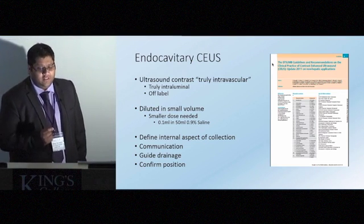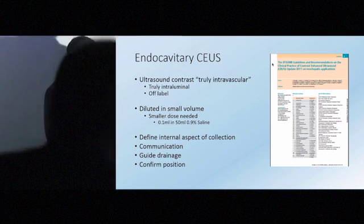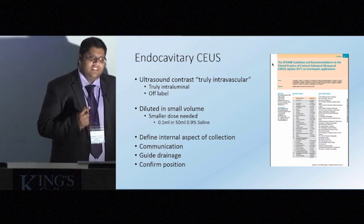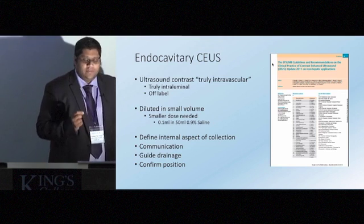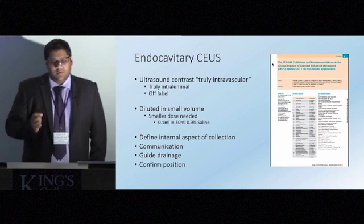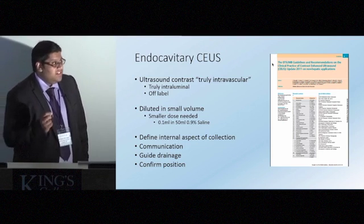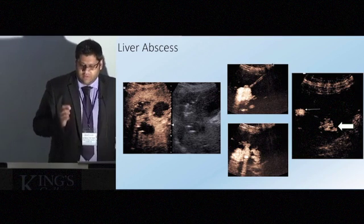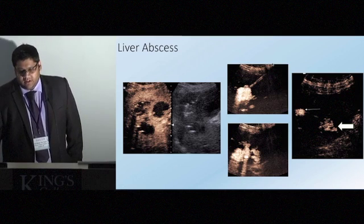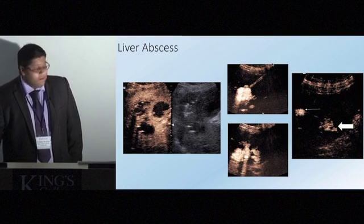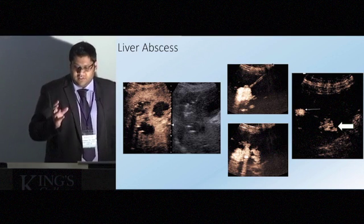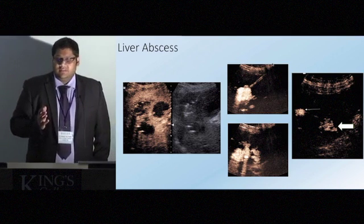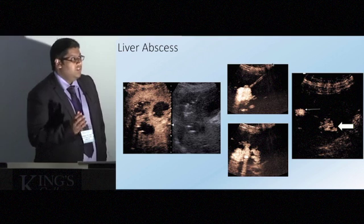Why do we do this? We want to confirm the drain position, which can be quite difficult. We also want to define the internal aspects of the collection itself, particularly as there may be distant parts of the collection which may not appear linked at first — is there communication between the two? Can we guide drainage? Do we need to put a second drain in? Looking at our patient, we can see the liver abscess on intravenous contrast, and then the appearances after contrast is injected through the indwelling drain. You can see a very clear definition of the edges, and on the far picture there's communication between distant aspects — so we don't necessarily need a second drain.